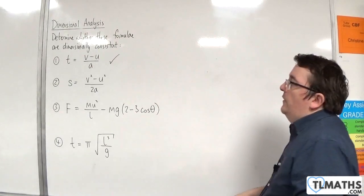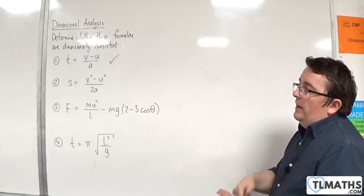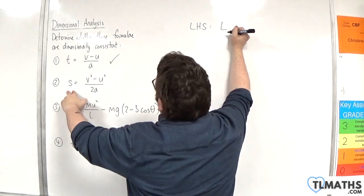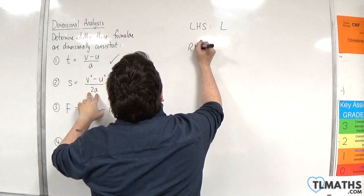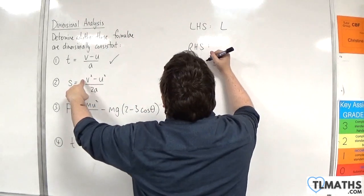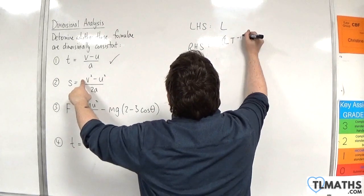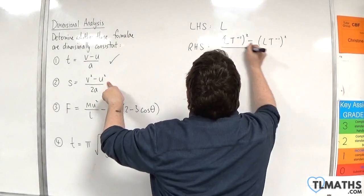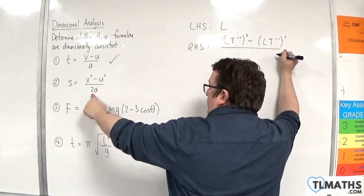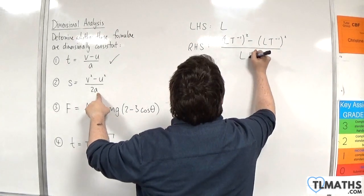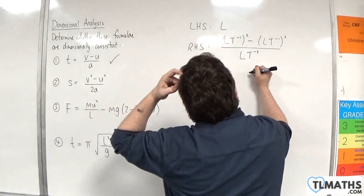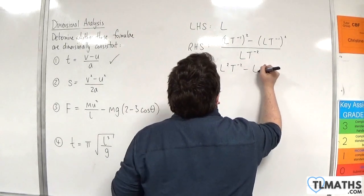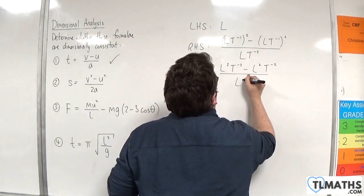Let's look at the second formula: s = (v² - u²) / 2a, where s is displacement, u and v are velocities, and a is acceleration. The left-hand side, being a displacement, is a length — so that's L. On the right-hand side we have velocity squared: velocity is LT⁻¹, now squared. Take away another velocity squared, divided by two times the acceleration. The two is dimensionless; the acceleration is LT⁻². So in the numerator we have L²T⁻² take away L²T⁻², divided by LT⁻².